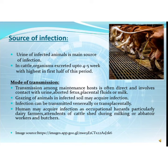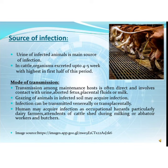The source of infection: urine of infected animals is the main source of infection. In cattle, the organisms are excreted for up to four to five weeks, with the highest incidence in the first half of this period. The mode of transmission: transmission among maintenance hosts is often direct and involves contact with infected urine, aborted fetuses, placental fluids, or milk. Grazing of animals in infected soil may also cause infection. In addition, infection can be transmitted venerally and transplacentally. Humans may acquire the infection as an occupational hazard, particularly dairy farmers, attendants of cattle sheds during milking, abattoir workers, and butchers.